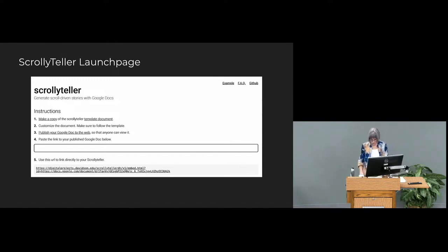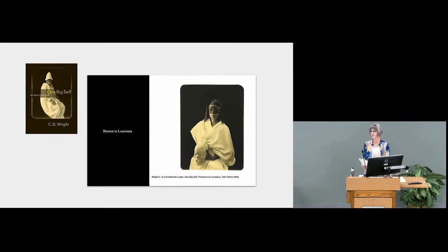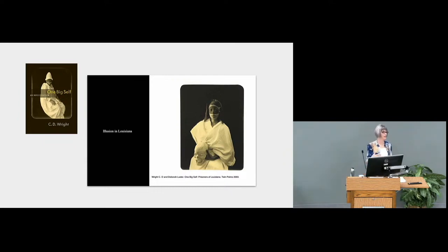I've been testing the tool with students in my word art classes for an assignment asking them to close read a poem from One Big Self — a documentary collaboration between poet C.D. Wright and photographer Deborah Lustre, who visited Louisiana prisoners and photographed and interviewed the incarcerated people there. Students chose a poem, incorporated one of Lustre's images into their close reading, and then wrote a reflection on their process using this new tool. Their reflections illuminated dimensions of inclusive DH design, some of which I hadn't even anticipated.